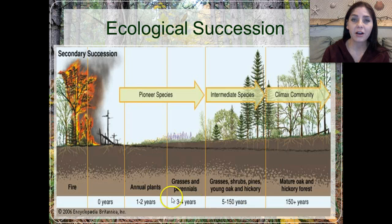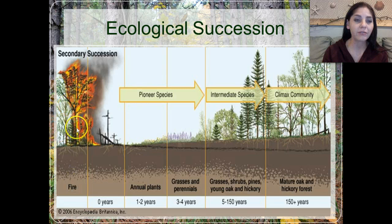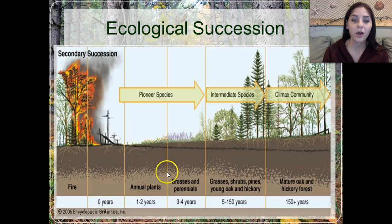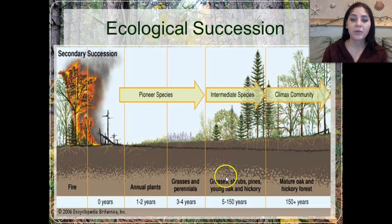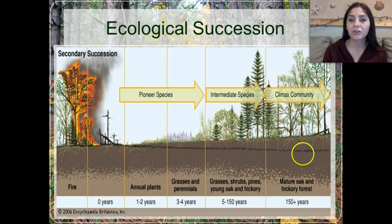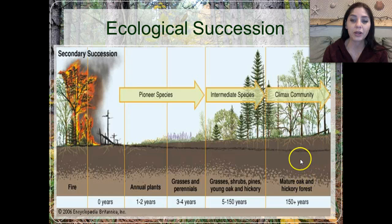Here are the phases of ecological succession after a natural disaster has occurred. After a fire, at zero years, we basically just have the soil left with our seedlings. We have annual plants start to form such as grasses and maybe some wildflowers. We have more grasses and perennials that start to form. Then we have our grasses, shrubs, small pine trees, and very young saplings of hickory, oak, and maple trees. And eventually we get our mature climax community, which includes pine trees as well as hardwood trees such as oak and hickory.